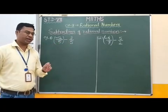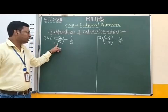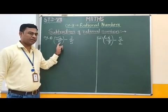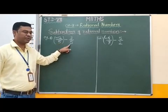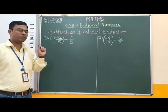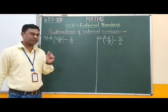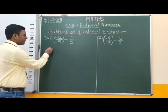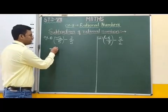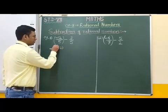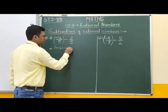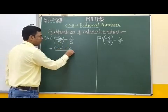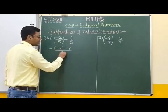Now students, if you observe here, the denominators of these two rational numbers are the same, that is 5 and 5. Therefore, we have to subtract only the numerators and keep the denominator common. Therefore we can write here: minus 12 minus 3, that is subtraction of numerators, and denominator common, that is 5.